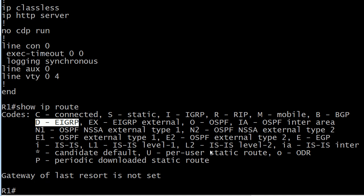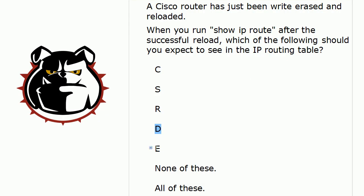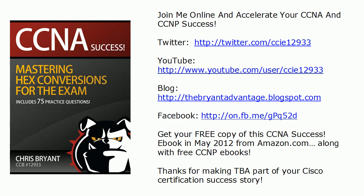So if you've ever wondered why an EIGRP route is indicated by the letter D, now you know. It's not a trick — there's a real historical reason. The key is to remember that your EIGRP code is D and not E. That concludes today's video practice exam. Hope to see you on our YouTube channel — we're headed for 6,000 subscribers. I'm Chris Bryant, and thanks for making TBA part of your CCNA and CCENT certification success story.